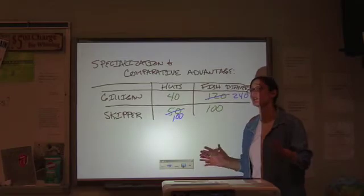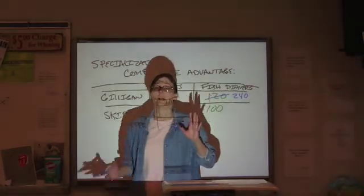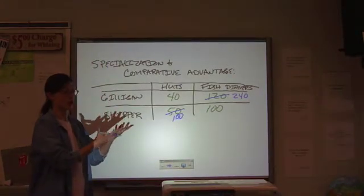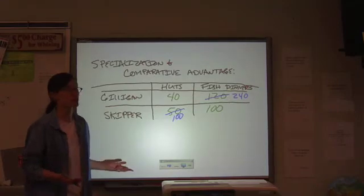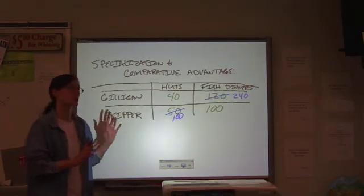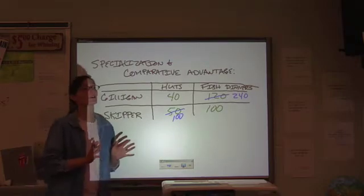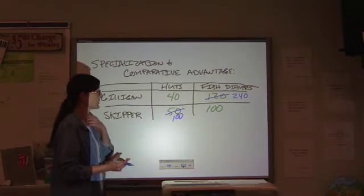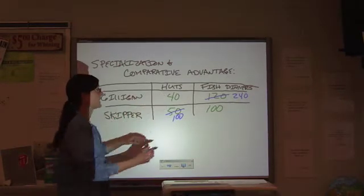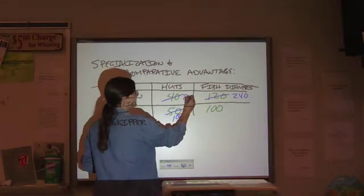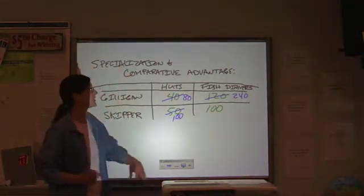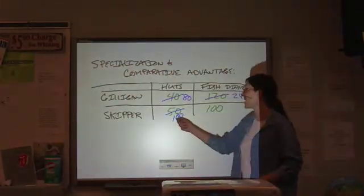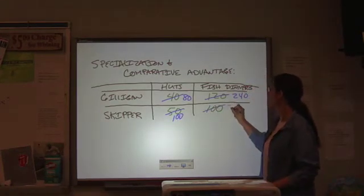But how does this relate to terms of trade? Instead of just looking at this very small kind of micro economy of the castaways on the island, let's consider this as a trade example. If we were going to look at this in terms of a PPF, we would have to look at it in terms of, okay, if Gilligan spent all of his time on huts, his total production would be 80. Or if he spent all of his time catching fish, it would be 240. Whereas if the skipper spent all of his time on huts, it would be 100. And all of his time on fish, it would be 200.